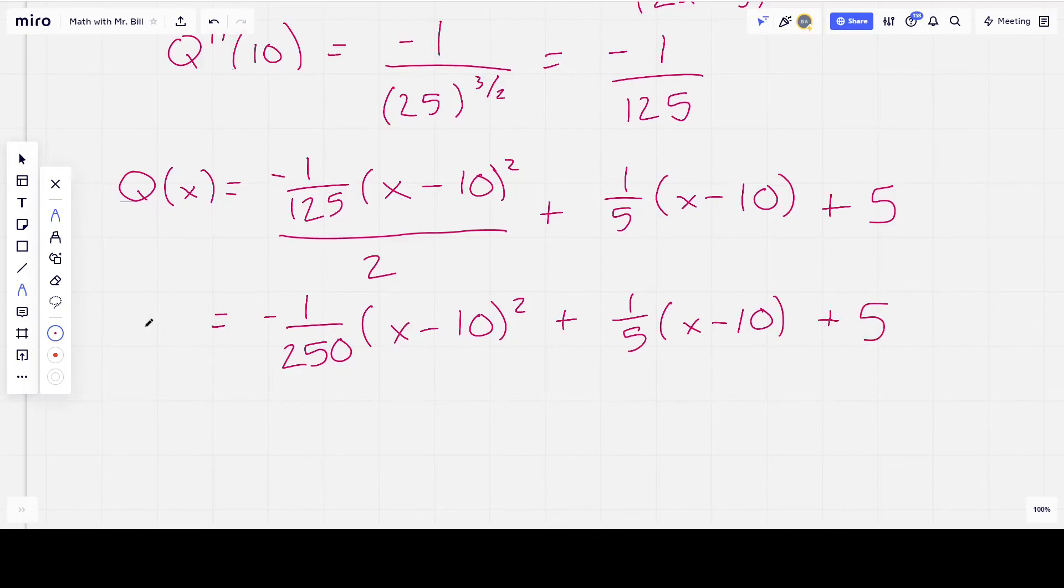That's it. That's our problem. So, we've got our linear approximation and the quadratic approximation of the function at the point (10, 5). If you have any questions about this, please feel free to put them in the comments below. And if you have any other problems that you'd like to see, please put them down there. And thanks for watching, and I'll see you on the next problem.